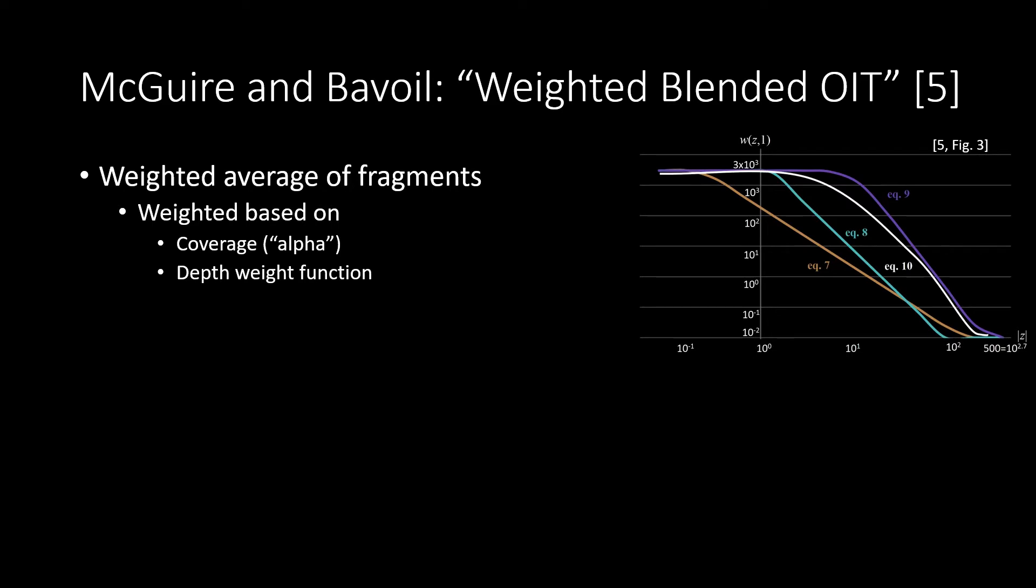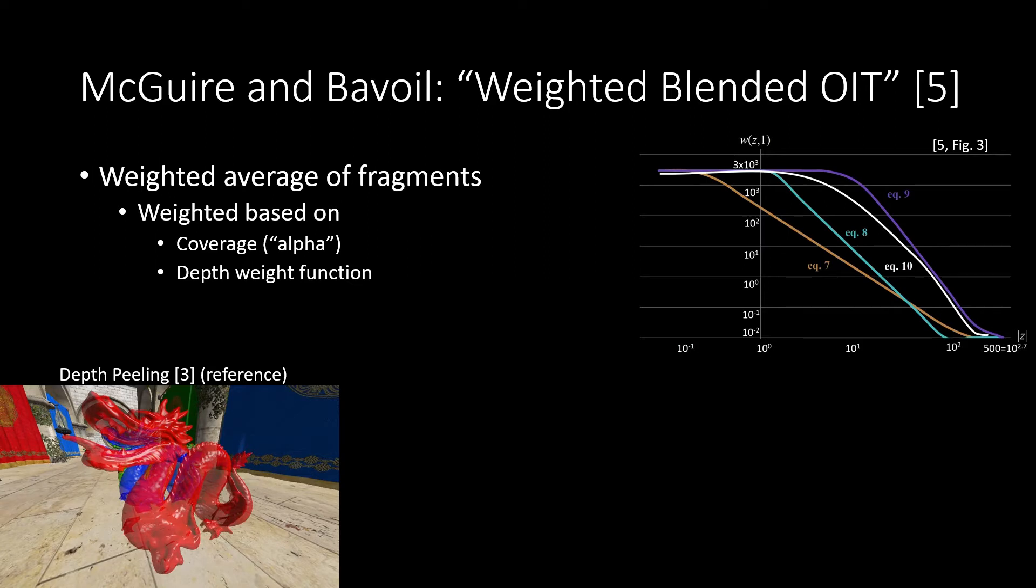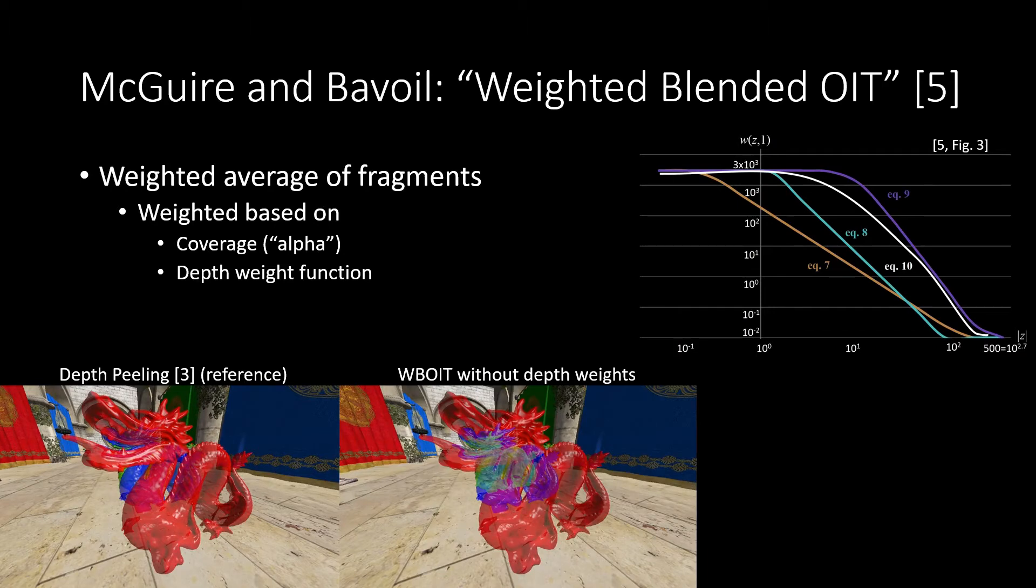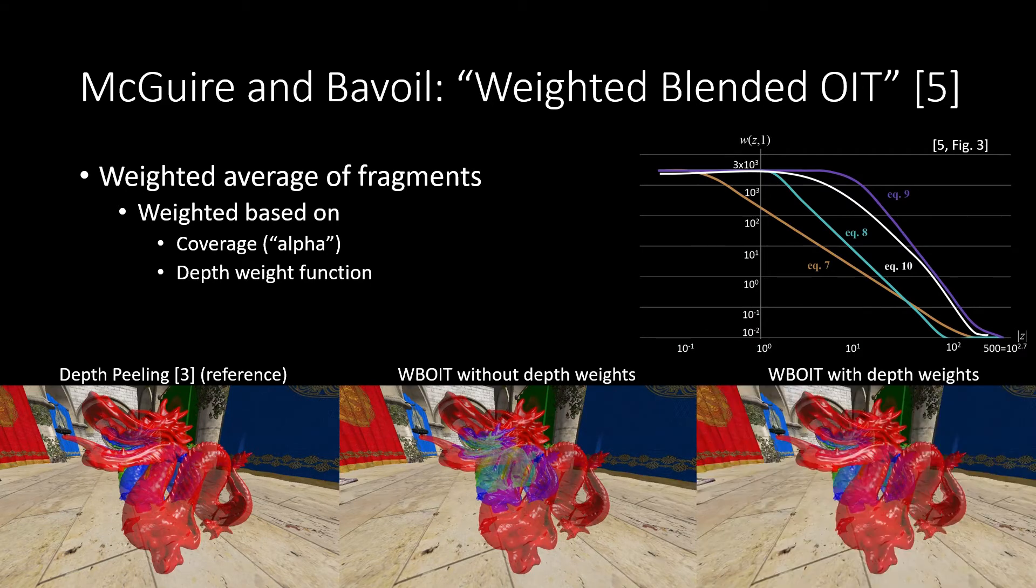This function basically assigns larger weights to fragments closer to the camera. Here we have a reference rendering using depth-peeling of a stack of differently colored dragons. We compare this to the weighted blended result without using depth weights. In the center the dragons are kind of arbitrarily blended together and we cannot really make out which surfaces are in front. In contrast, if we enable the depth weights, we get a result which is much more plausible.